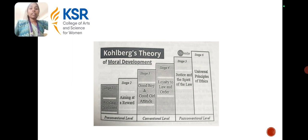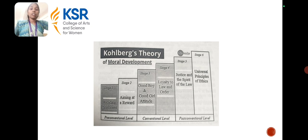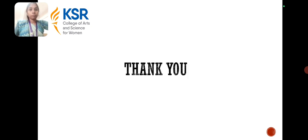Stage 1 and stage 2 come under the pre-conventional level. Stage 3 and stage 4 come under the conventional level. Stage 5 and stage 6 come under the post-conventional level. Thank you.